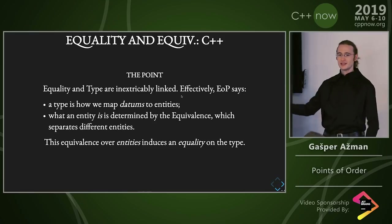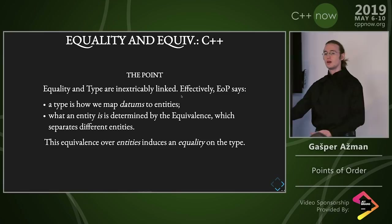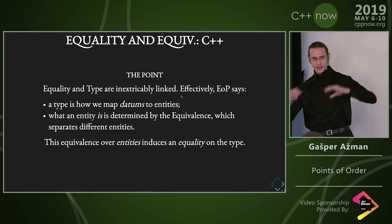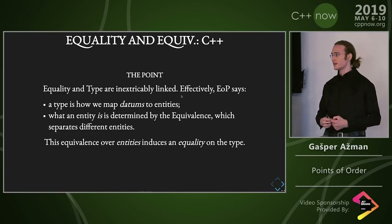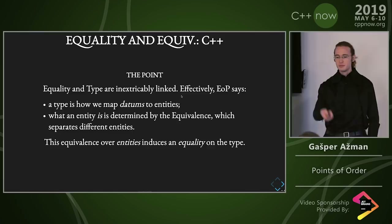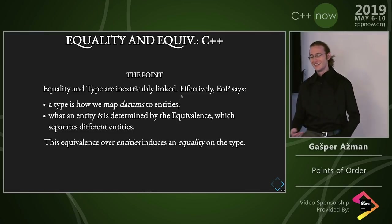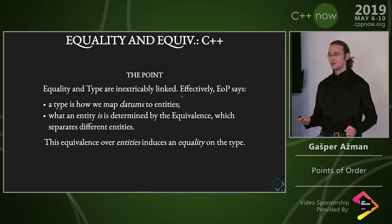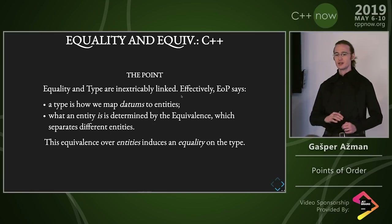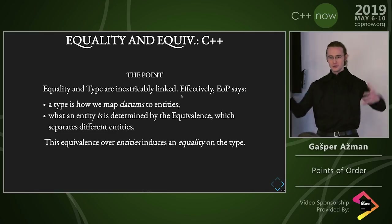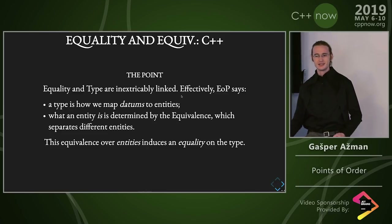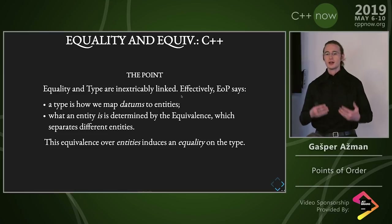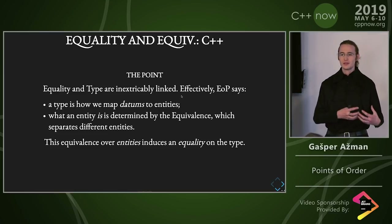This equivalence that's in our head induces the equality on the datums, on the type. We have this math in our head and there's a lot of molecules in this room and some of them clump together slightly better and we put an equivalence relation on it and say that's Mickey. And then we put another equivalence relation over it and say anyone who is at CppCon is in one equivalence class and anyone who's not is in another equivalence class — and that's how we divide these things. So we can model the world in a finite number of things this way.